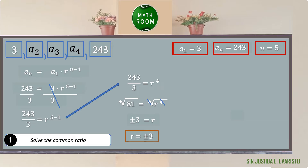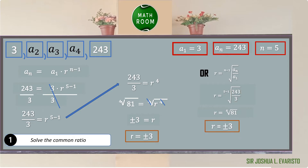Let's verify using the simplified formula: r equals the (n minus 1) root of a sub n over a sub 1. By substitution, r equals the (5 minus 1) root of 243 over 3, which is the 4th root of 81, giving us positive or negative 3. Therefore, the common ratio is confirmed as positive or negative 3.